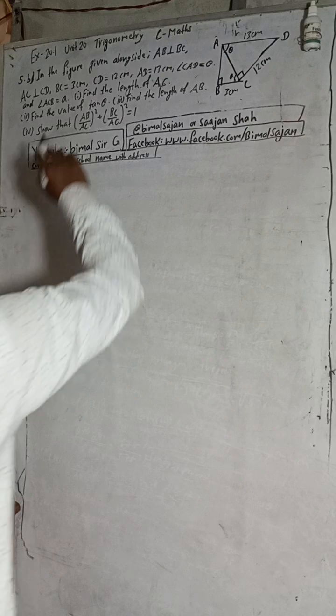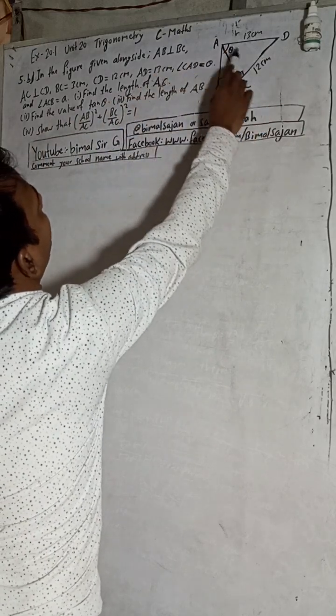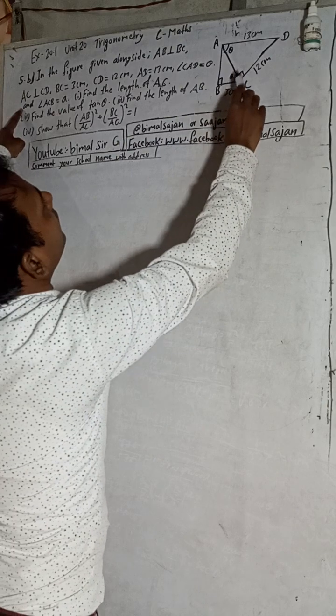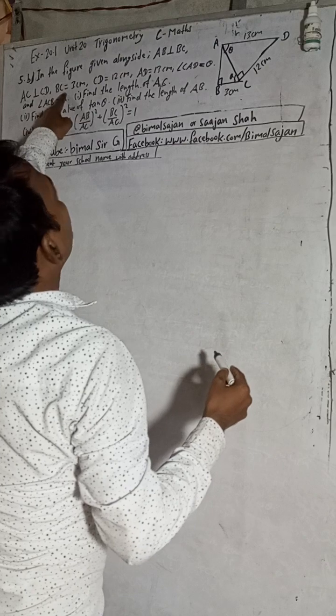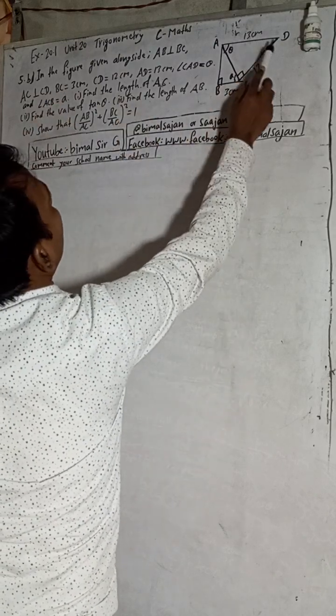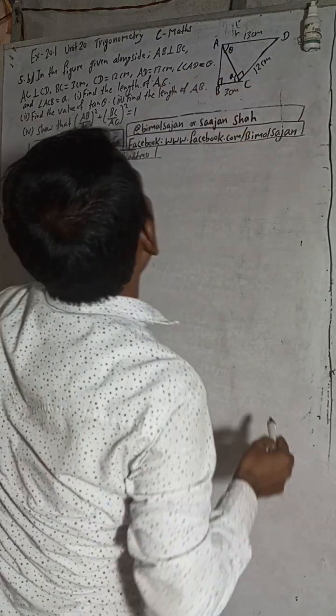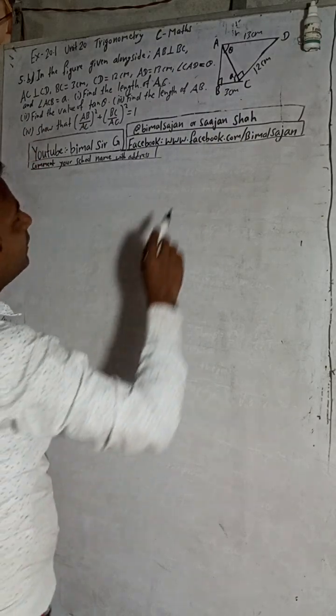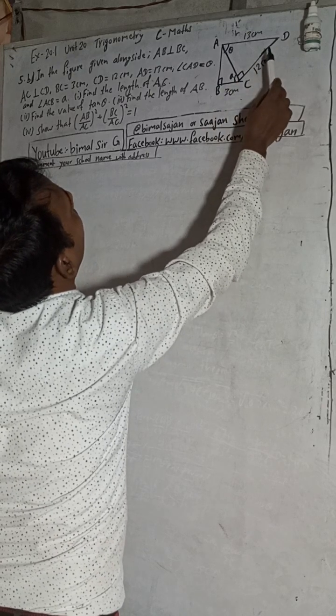Looking at the problem: CD is equal to 3cm, actually CD is equal to 2cm going to 3cm, angle CAD is theta, angle ACB is alpha, and we need to find the length of AC. We have to consider this triangle ACD.